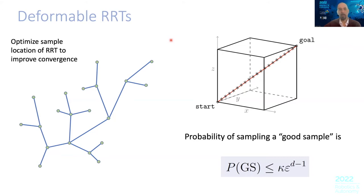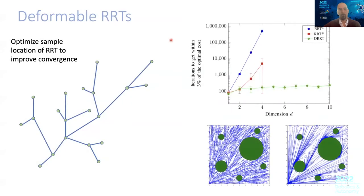I won't discuss smart sampling here, but we have work that addresses how you can sample in a smart way. One thing you can do is develop what I call deformable RRTs — work we did a few years back. Essentially, you look at the data structure and realize these points were sampled randomly anyway. So why stick to these exact points? You can use local gradient descent to move these points around as you wish, since they're random anyway.